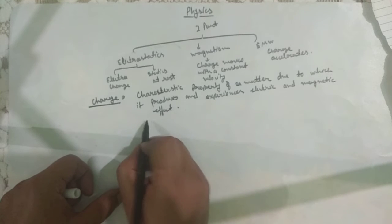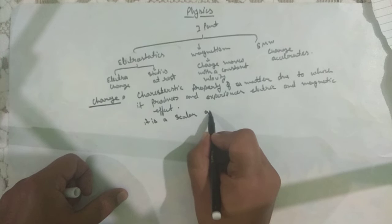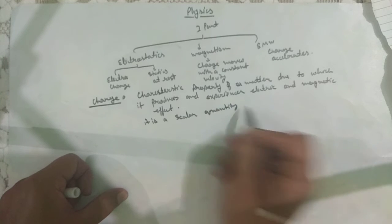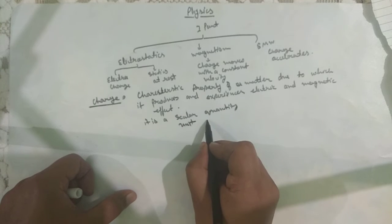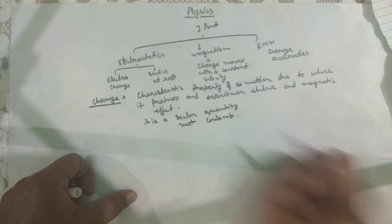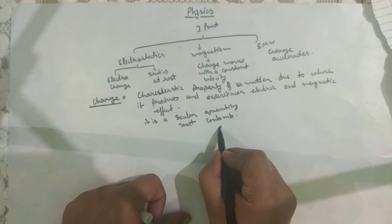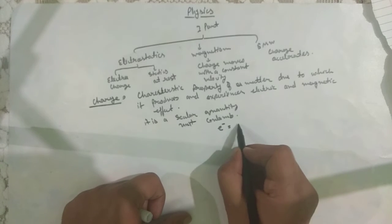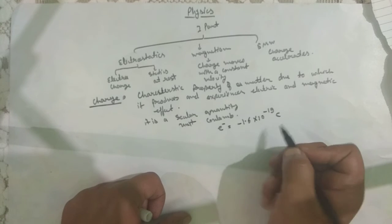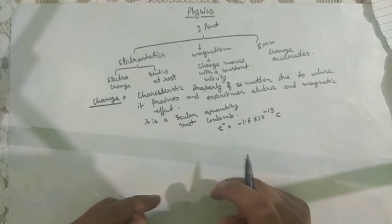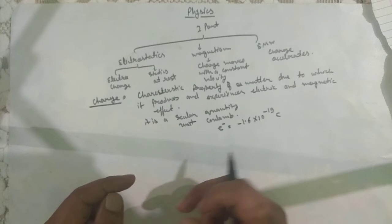Charge is a scalar quantity. Its unit is coulomb. The charge of an electron equals minus 1.6 into 10 to the power minus 19 coulomb. Now, how does charge arise? Charge arises from the excess or deficit of electrons.